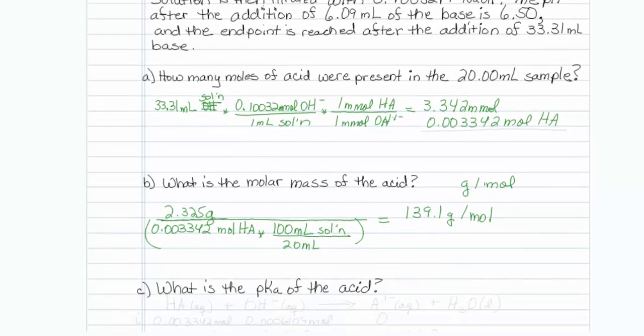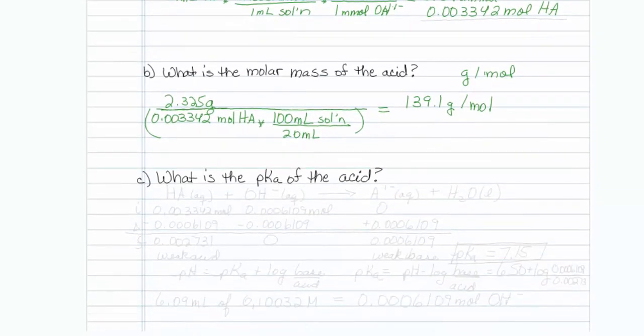The last part asks, what is the pKa of the acid? We are given 1 pH, so that would be maybe useful into getting the pKa. Let's see what I can do with this.